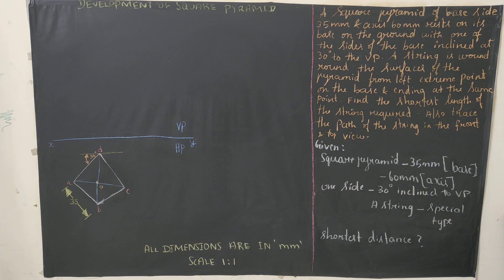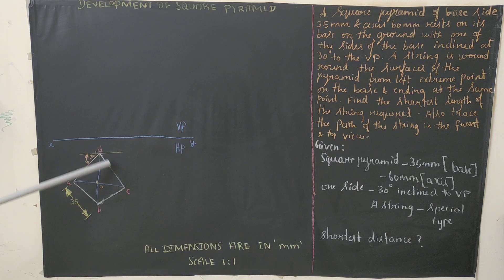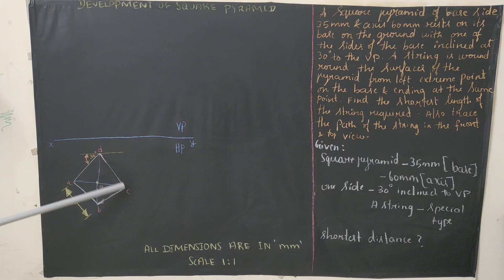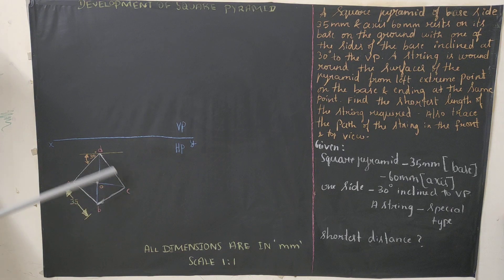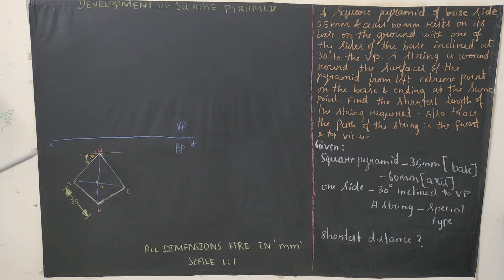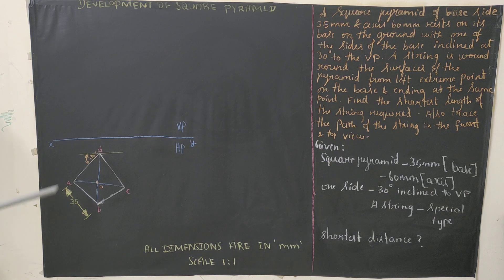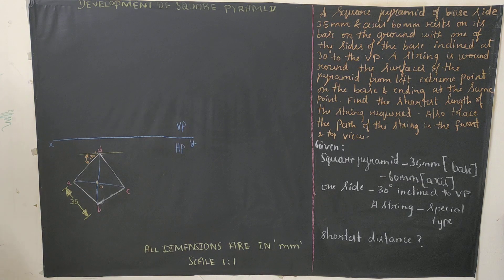From each corner draw 90-degree lines of 35mm and join the points to complete the square. Name the corners A, B, C, D and find the center by joining AC and BD diagonally. For dimensioning, use a 2H pencil for extension lines and H pencil for dimension lines and arrowheads. Write 35mm and mark the 30-degree angle. The top view of the square pyramid is now drawn.